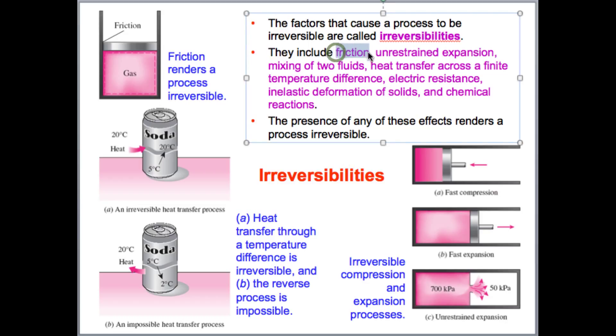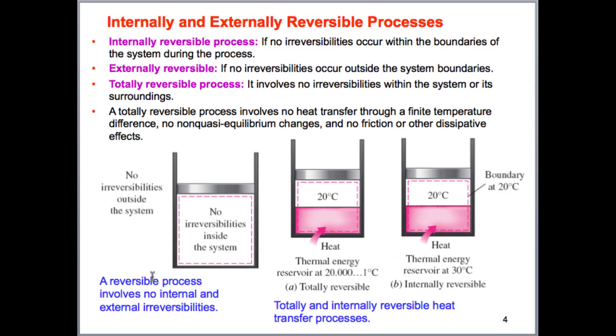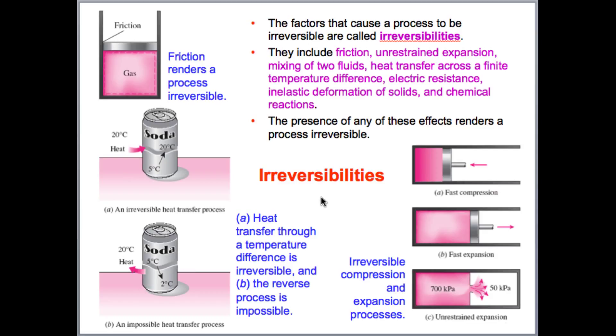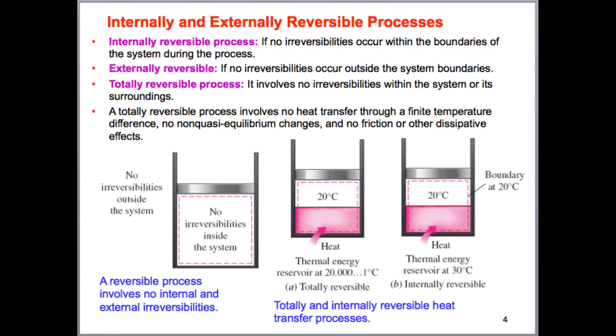Now, let me talk a little bit about irreversibilities before I get into that 100% not being the limit. Irreversibilities include friction, if we have unrestrained expansion, mixing of two fluids, heat transfer that occurs here - this would be irreversible. We can't go in the other direction. There's several different irreversibilities that we can't just turn back to the way that originally was.